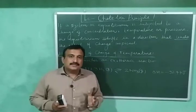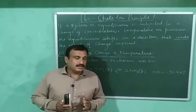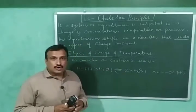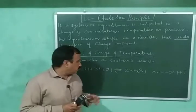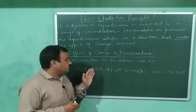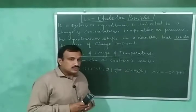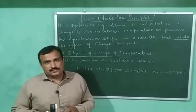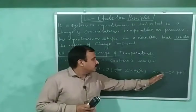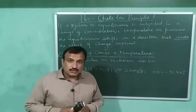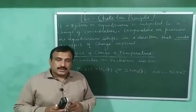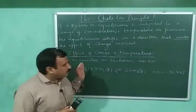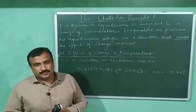To explain this effect, I have considered an exothermic reaction — the reaction for the formation of ammonia — in which one mole of nitrogen reacts with three moles of hydrogen, giving two moles of ammonia. All the reactants and products are in the gaseous phase. The delta H for this reaction is minus 92.4 kilojoules. This means the forward reaction is exothermic and the backward reaction is endothermic.